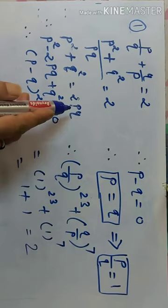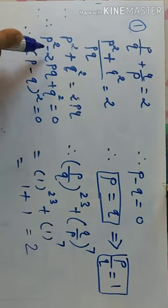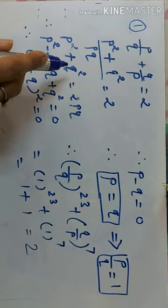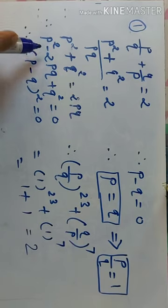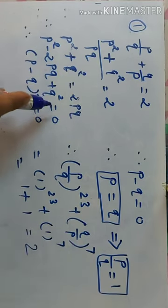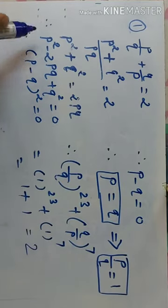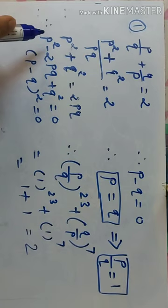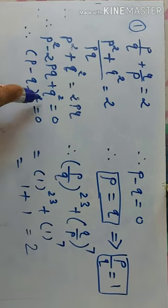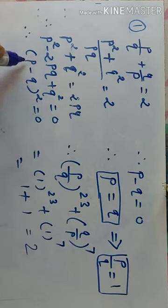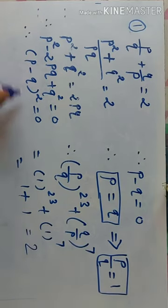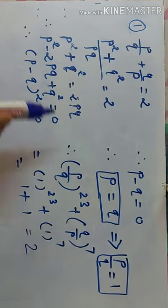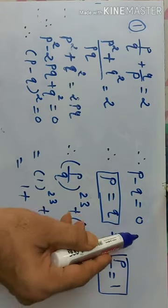Therefore, 2PQ को इस तरफ ले आए, तो P² - 2PQ + Q² = 0। यह A² - 2AB + B² = 0 की form है। इसका factorization (A-B)² की तरह (P-Q)² = 0 होगा। दोनों तरफ square root निकालने पर P - Q = 0।